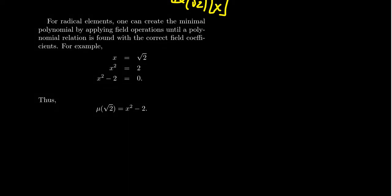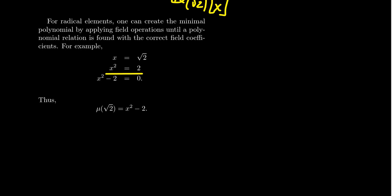When your root comes from a radical, it's easy to construct the minimal polynomial by working backwards. To find a polynomial with √2 as a root: since √2 is a number that squares to 2, take the equation x = √2 and square both sides to get x² = 2, then move the 2 to the other side to get x² - 2 = 0. Since we chose x to equal that value, x² - 2 is the minimal polynomial — the smallest polynomial we constructed. Therefore, the minimal polynomial of √2 over the rational field is x² - 2.